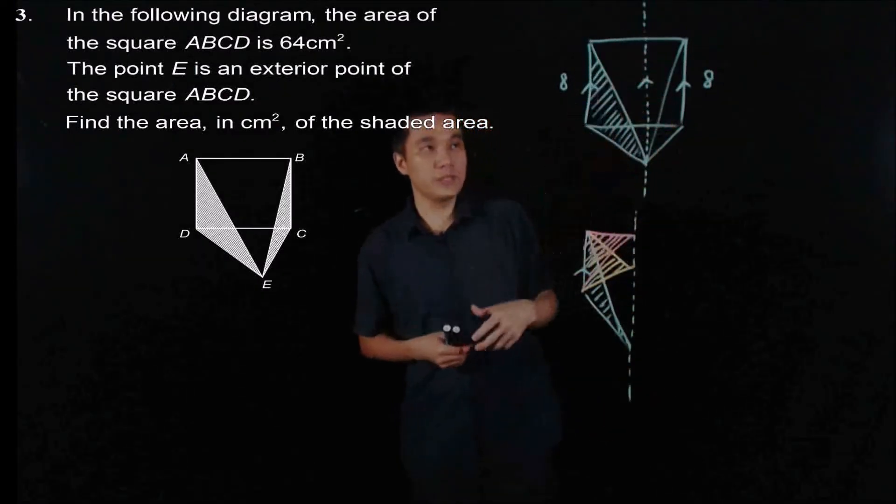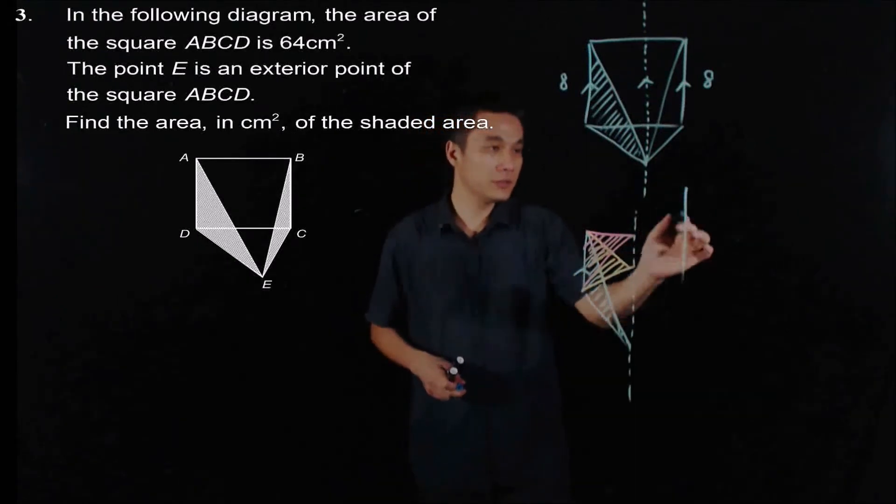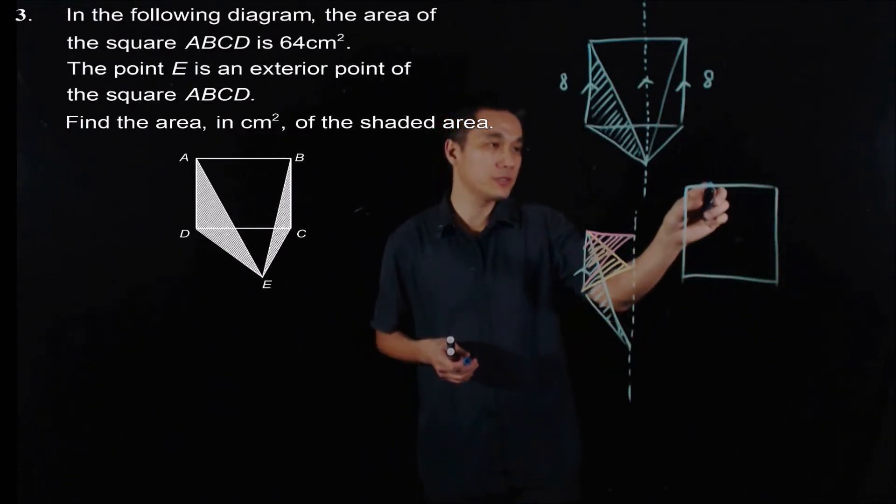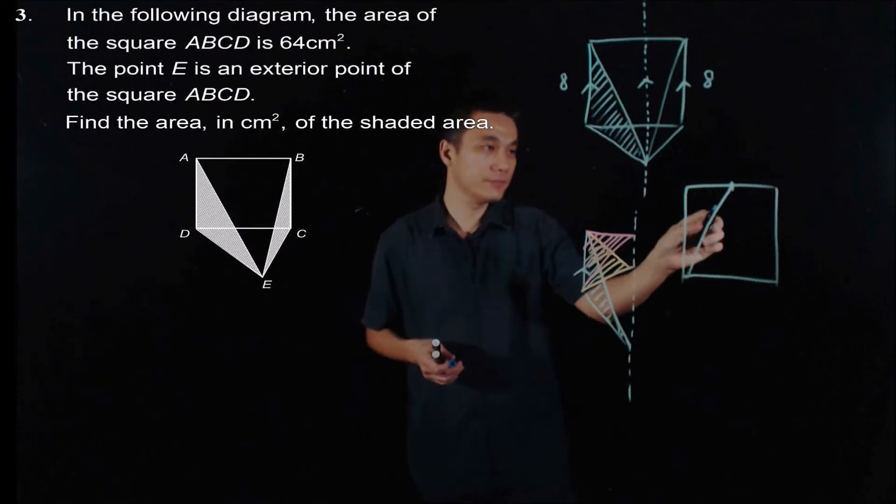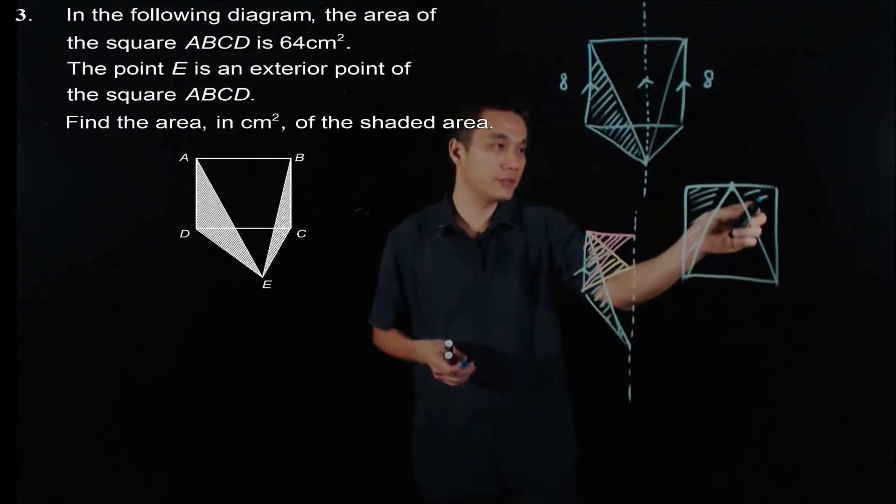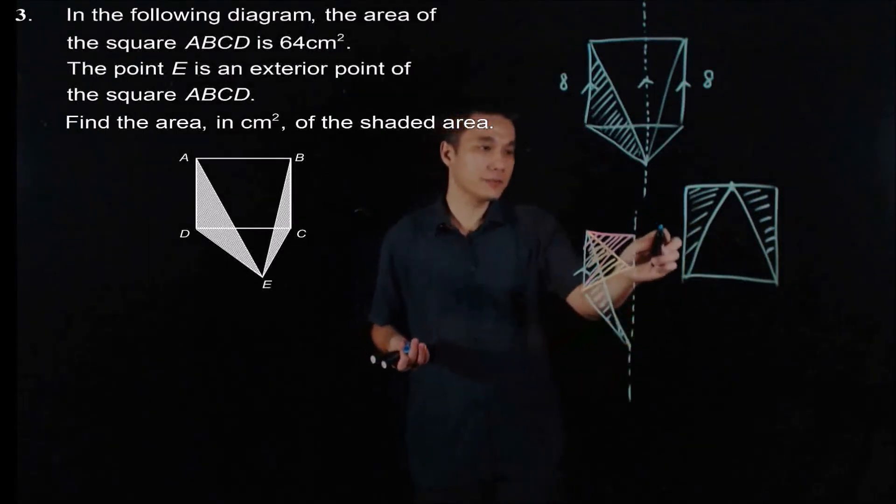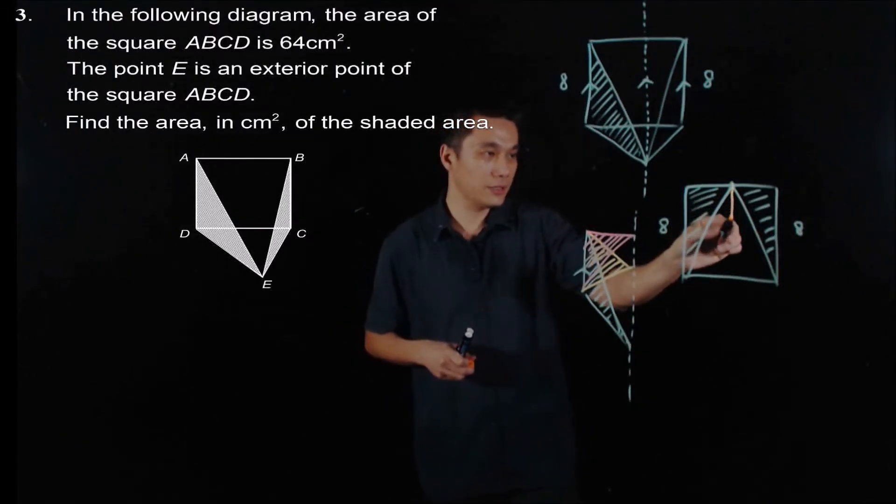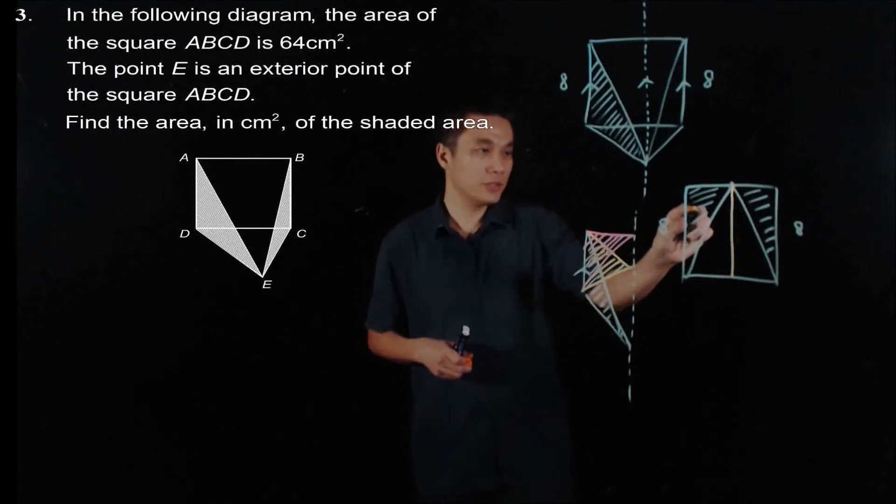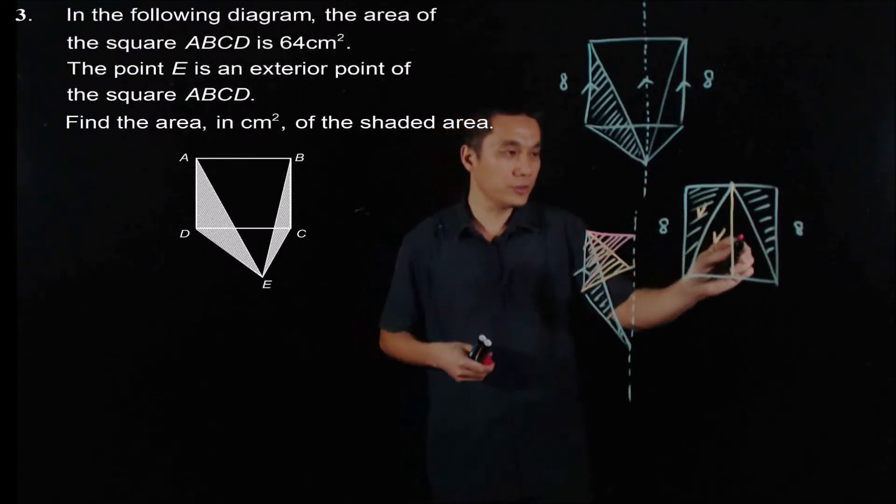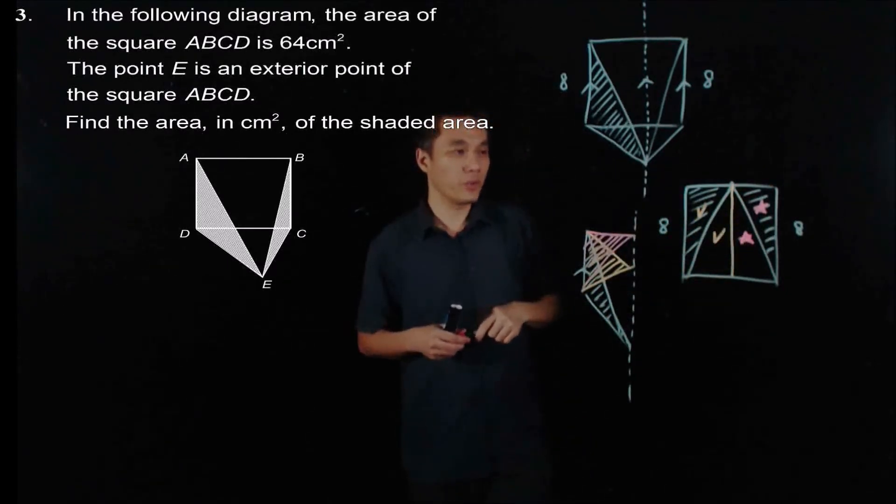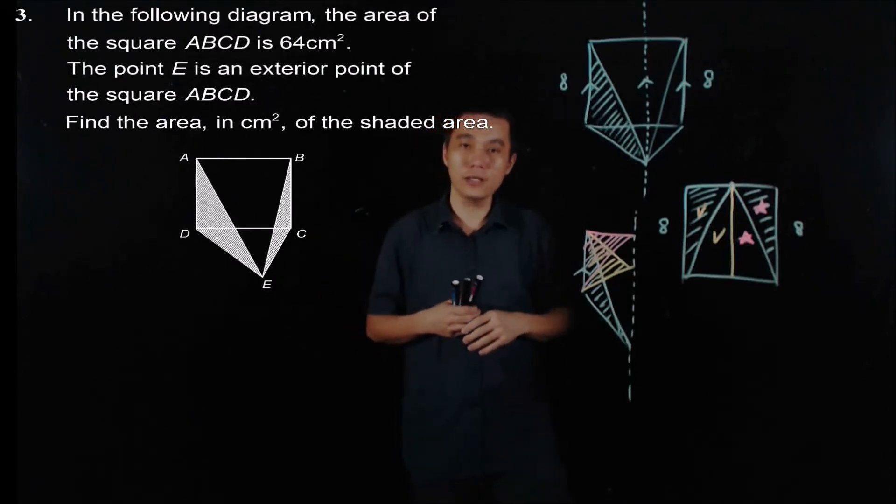So now we can transform this into a point inside the square. So I can just transform this somewhere here. And they are still of the same area. Now, it is obvious that this small triangle here is the same as the area will be the same. So these two areas are the same. And these two areas are the same.